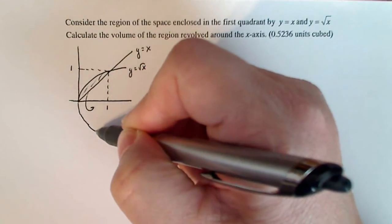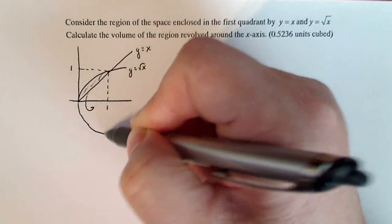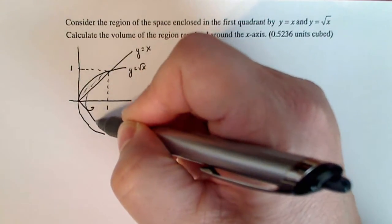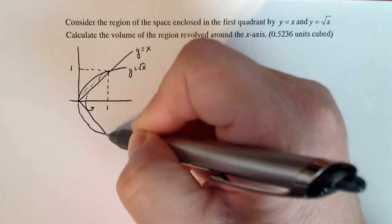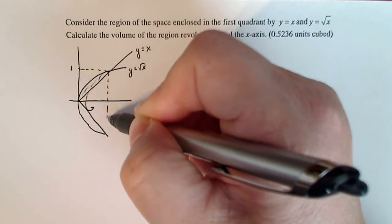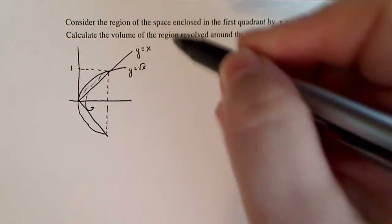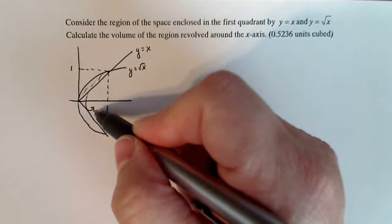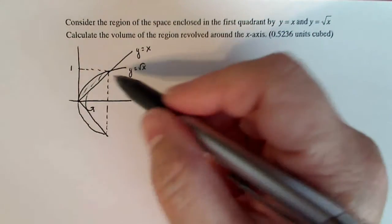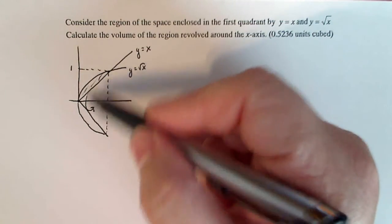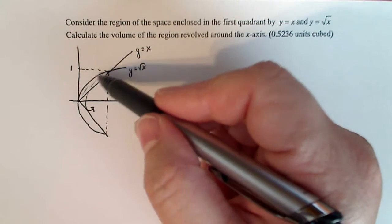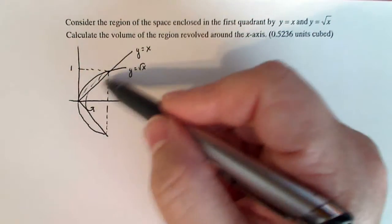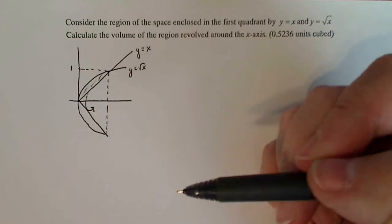If I drew the bottom half of this — I am no artist, but I will do the best I can — this thing is going to revolve around the axis this way, and if you can imagine that, you'd have a parabola shape outside and a V-shape inside.